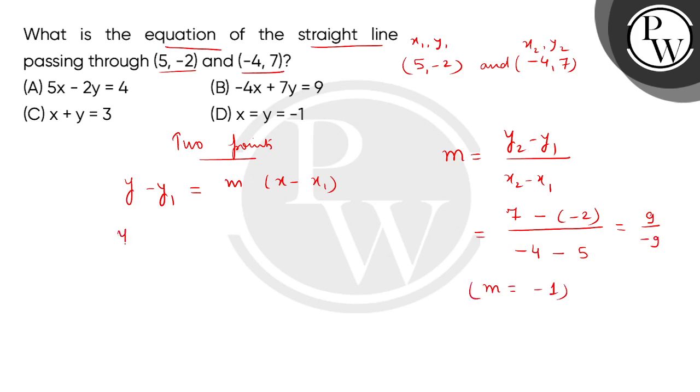Now put the values: y minus y1 (which is minus 2) equals minus 1 times (x minus x1, which is 5). This will be y plus 2 equals minus x plus 5, so this will be y plus x equals 3.